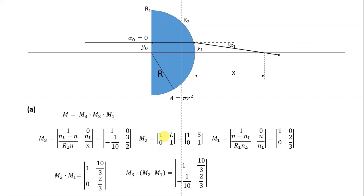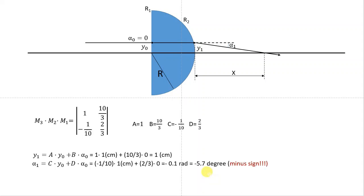M2 is the translation matrix from the first surface to the last, and this translation distance of 5 centimeters is essentially the radius. M1 is the refraction matrix at the first surface. We then compute the result of M2 times M1, and multiply M3 with that result, giving us the matrix of the entire system.